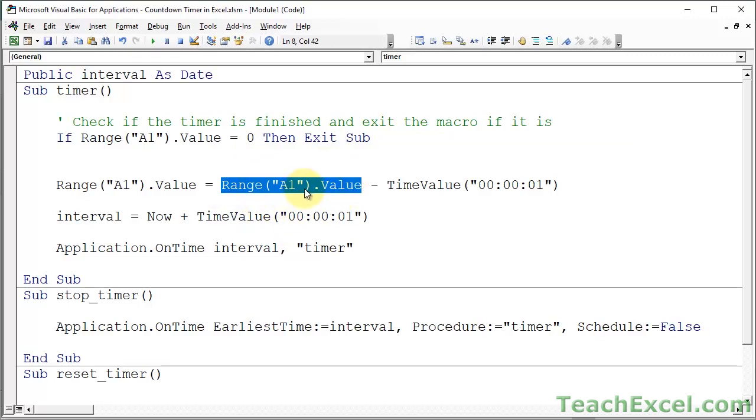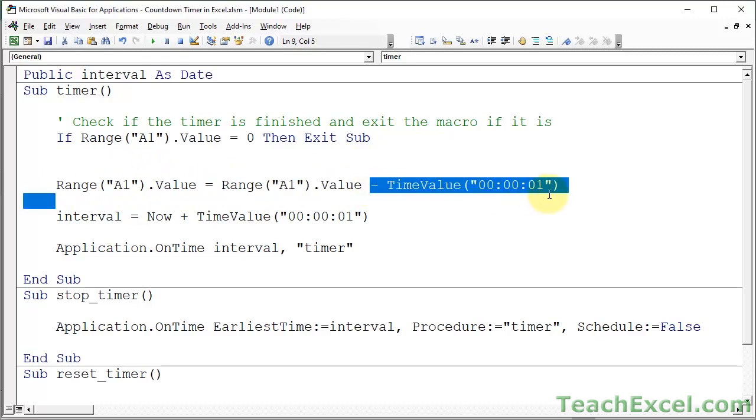And then we put that new value into the same cell. So all we're doing is we are resetting the countdown timer cell to its current value minus one second. Okay,